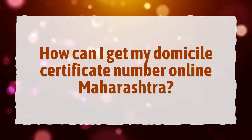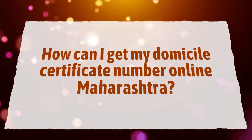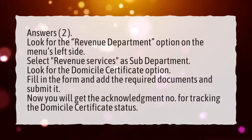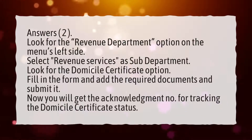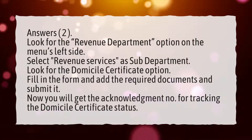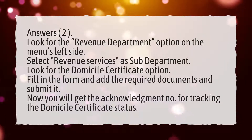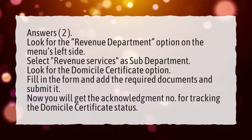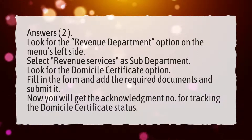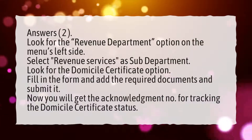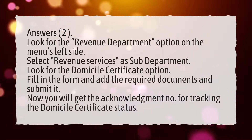How can I get my domicile certificate number online in Maharashtra? Look for the 'Revenue Department' option on the menu's left side. Select 'Revenue Services' as the sub-department. Look for the domicile certificate option. Fill in the form, add the required documents, and submit it. You will then receive an acknowledgement number for tracking the domicile certificate status.